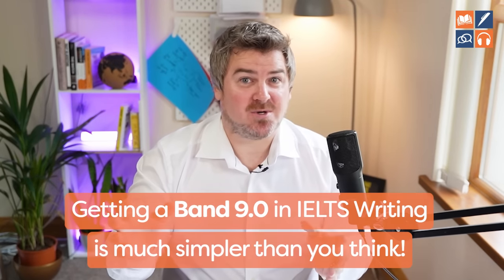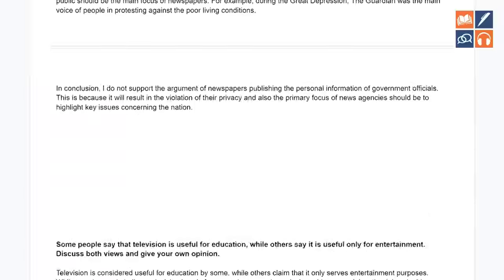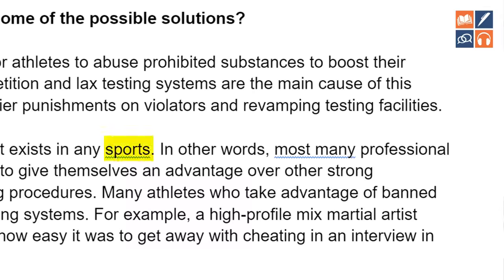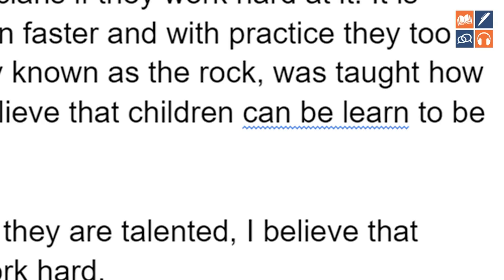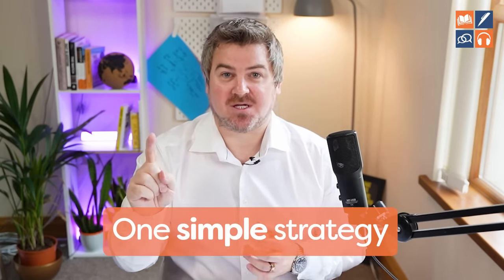Getting a band 8 or 9 in IELTS writing is much simpler than you think. Over the course of my career, I have corrected more than 10,000 IELTS essays. I've seen every single mistake that an IELTS student can make, from structuring their arguments to making silly vocabulary errors. And one thing I can tell you is all of these can be easily fixed. Every student that I have worked with that has got a band 8 or 9 has followed one simple strategy: understand what the common mistakes are and learn how to fix them.